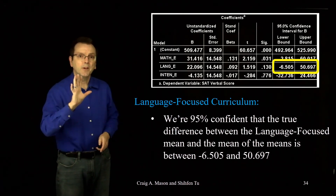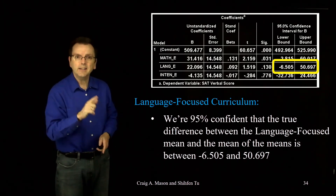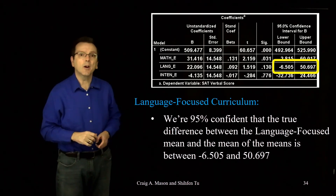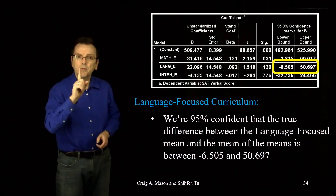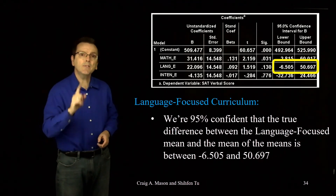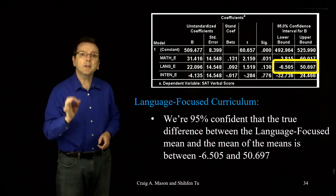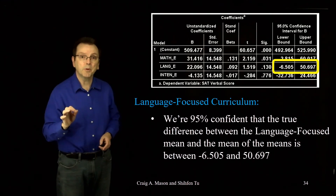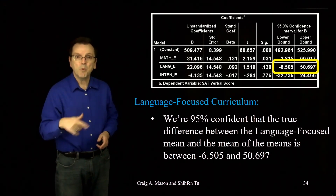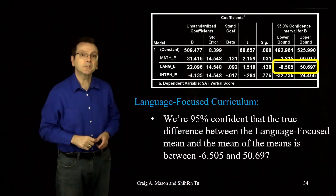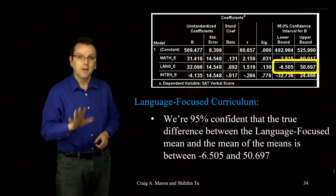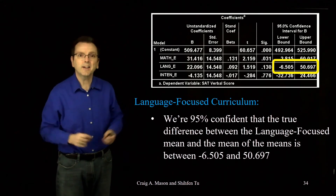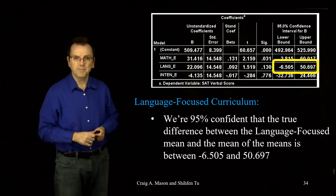Now let's wrap up this video. Before starting the next video, see if you can calculate the predicted score for the intensive curriculum group, and then report and interpret the t-score and 95% confidence interval. When you're done or just get stuck, start the next video.